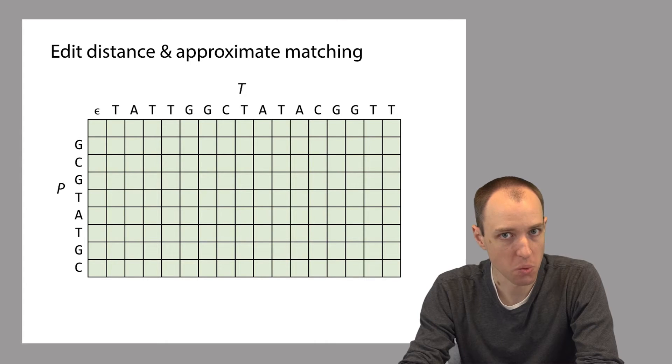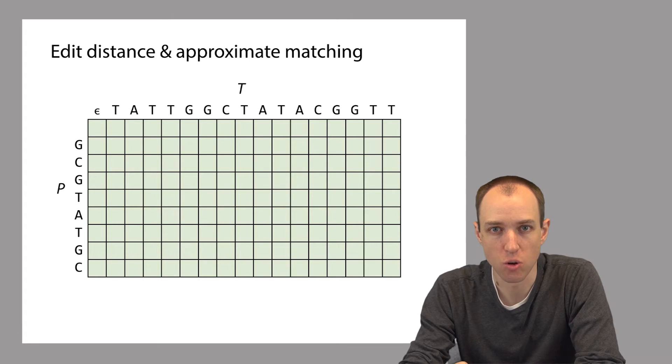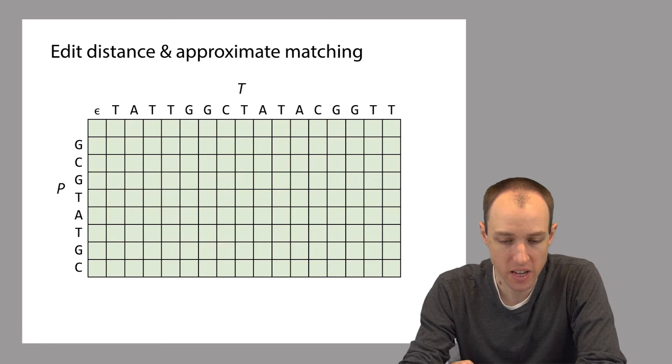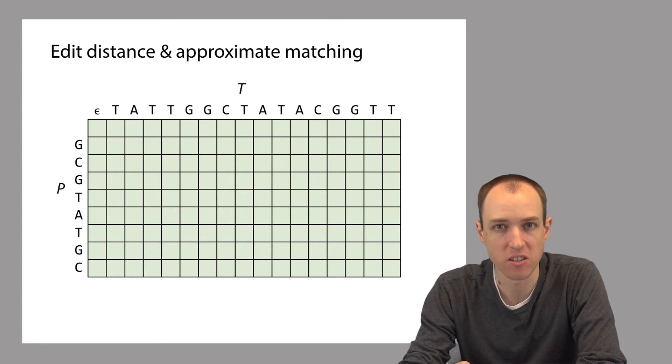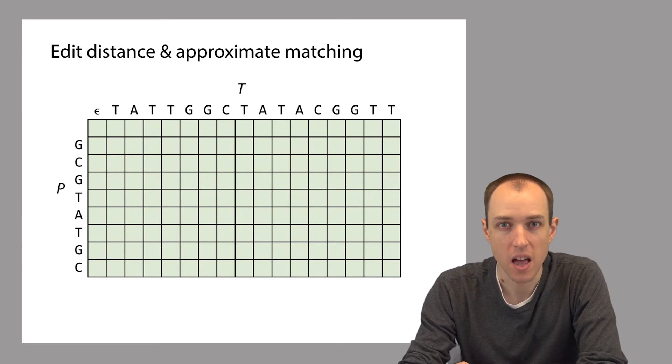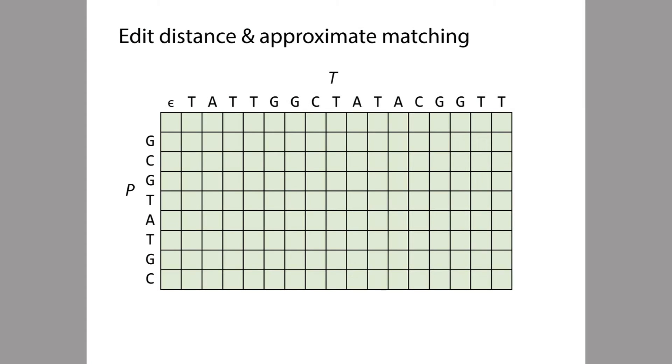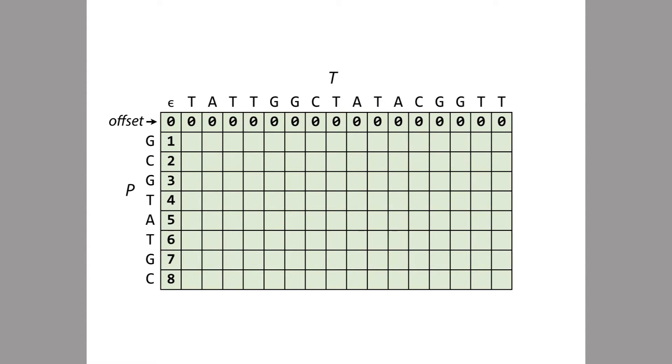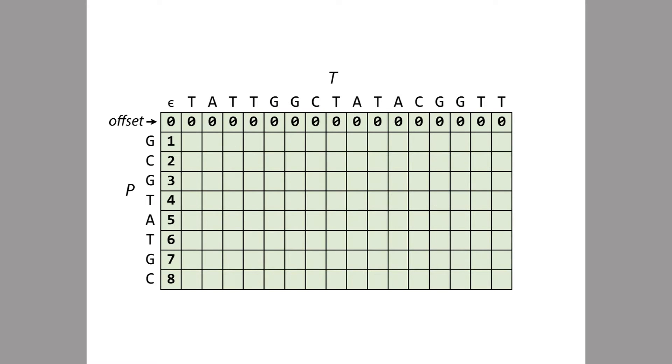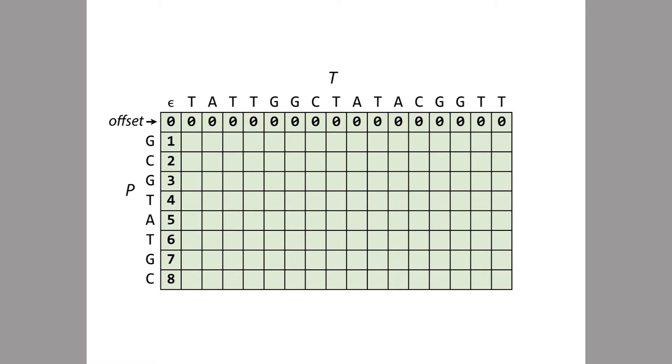One change we'll make to our edit distance algorithm is that we'll initialize this matrix a little bit differently. Before we initialized the first row and the first column with ascending integers 0, 1, 2, 3, etc. This made sense because if we're talking about the edit distance between the empty string and a string of length 3, that edit distance has to be 3. For approximate matching we're instead going to initialize the first row with all zeros. The first column we'll initialize as we did before with ascending integers.